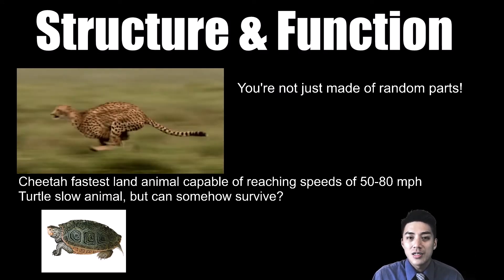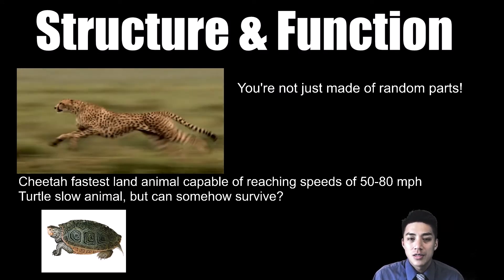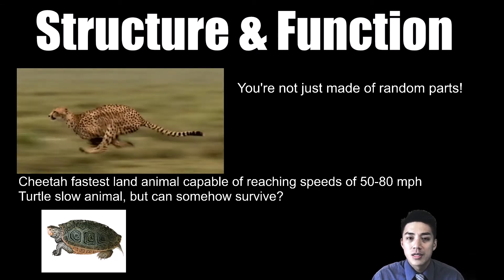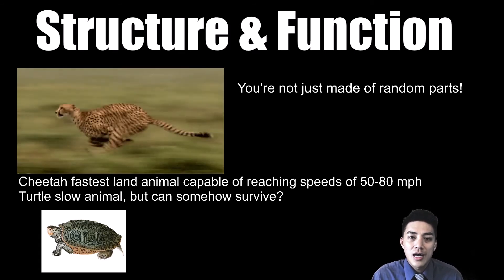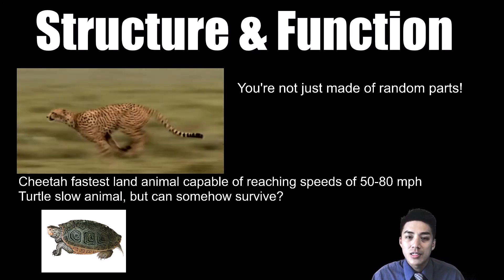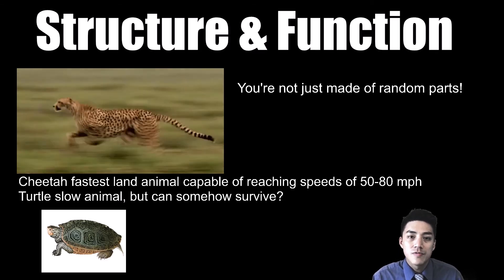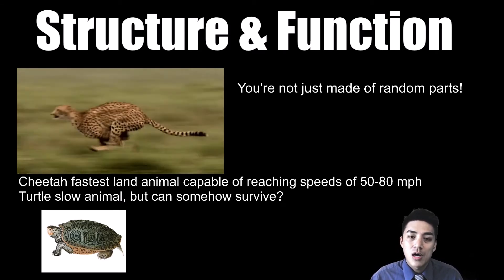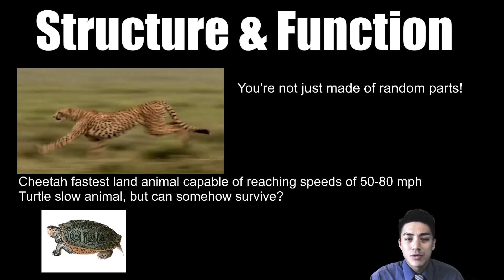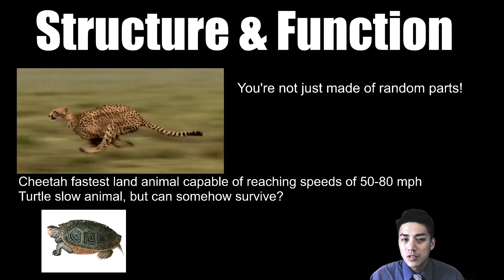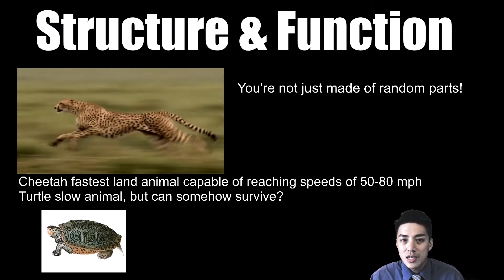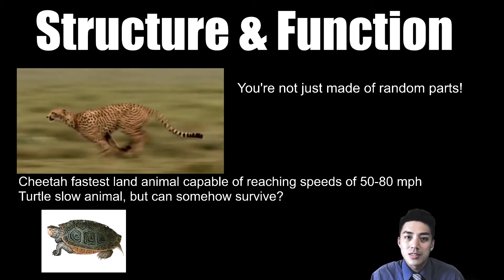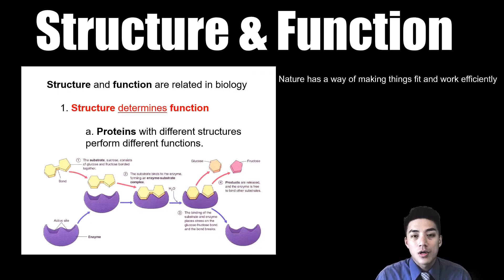Another big idea in biology is structure and function. You're not just a blob made of random parts — the way that you're built has a certain purpose. If you look at a cheetah, it has a streamlined body that allows it to quickly accelerate and make explosive movements, allowing it to be one of the fastest land mammals on earth. However, if you contrast that with a turtle, the turtle is extremely slow, but it's been able to survive for many generations against scary predators because it has a hard shell that it can retreat inside of. Nature has a way of making things fit and work together efficiently. Structure determines function.